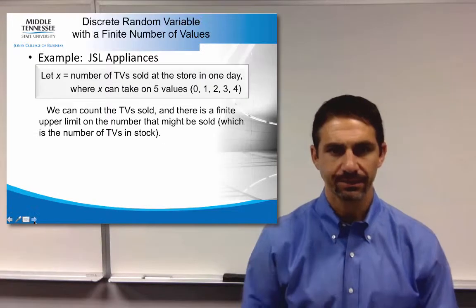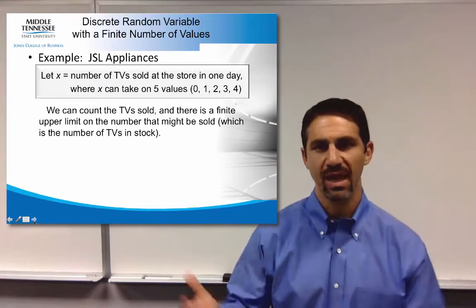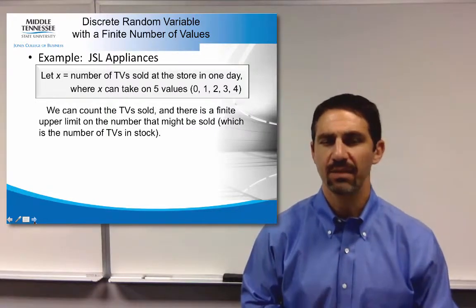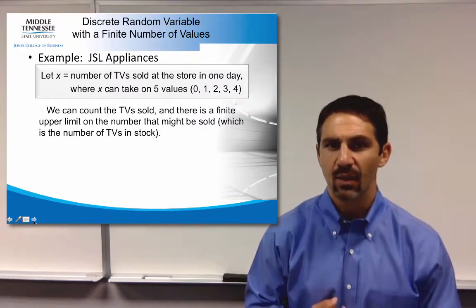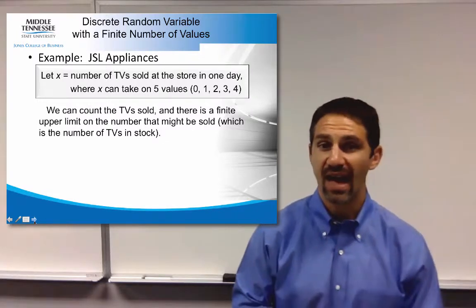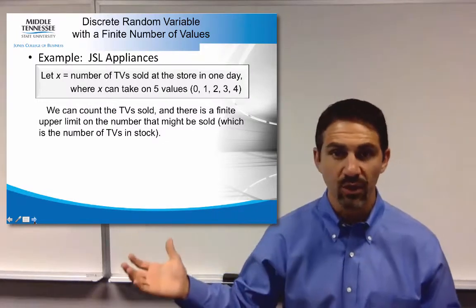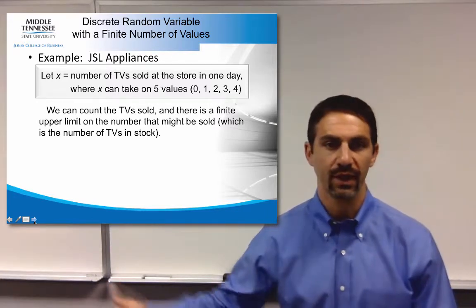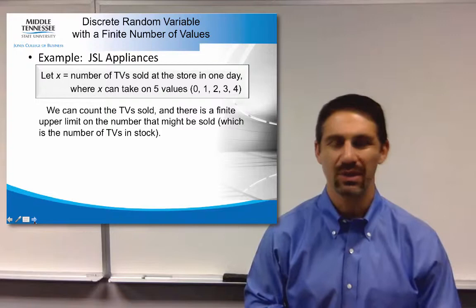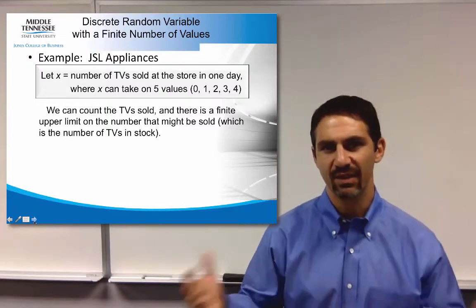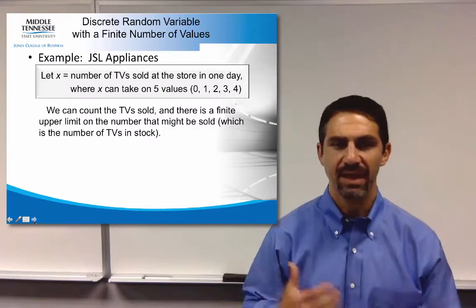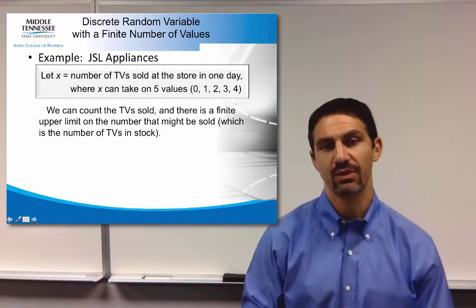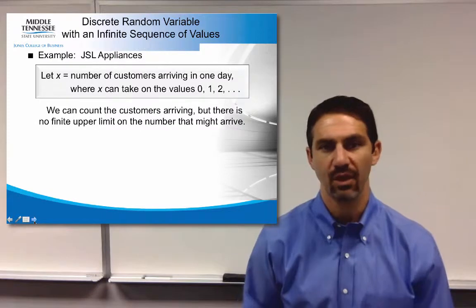Let's look at an example here, JSL Appliances looking at TVs sold. If you're looking at number of TVs sold at a store in a given day, where X can take on 5 different values, which means they've never sold more than 4 in a day, but they've definitely sold 0, 1, 2, 3, and 4. What can we do with this type of data? We're going to look at different number of days, and based on that, we can look at frequencies.